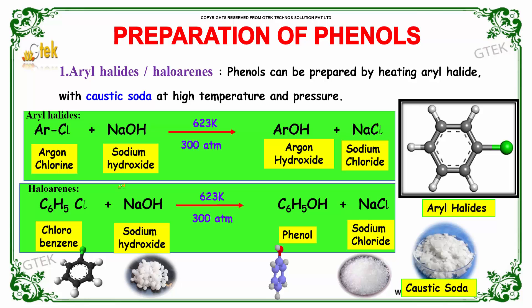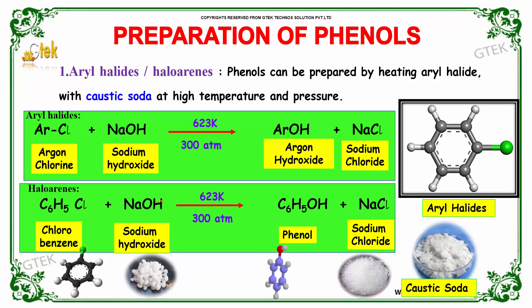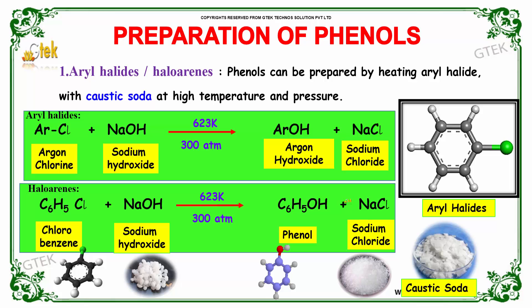In the case of haloarenes, let us take an example: chlorobenzene. On addition of NaOH (sodium hydroxide) at 623 Kelvin and 300 atmospheric pressure, we would obtain phenol and sodium chloride as the byproduct.